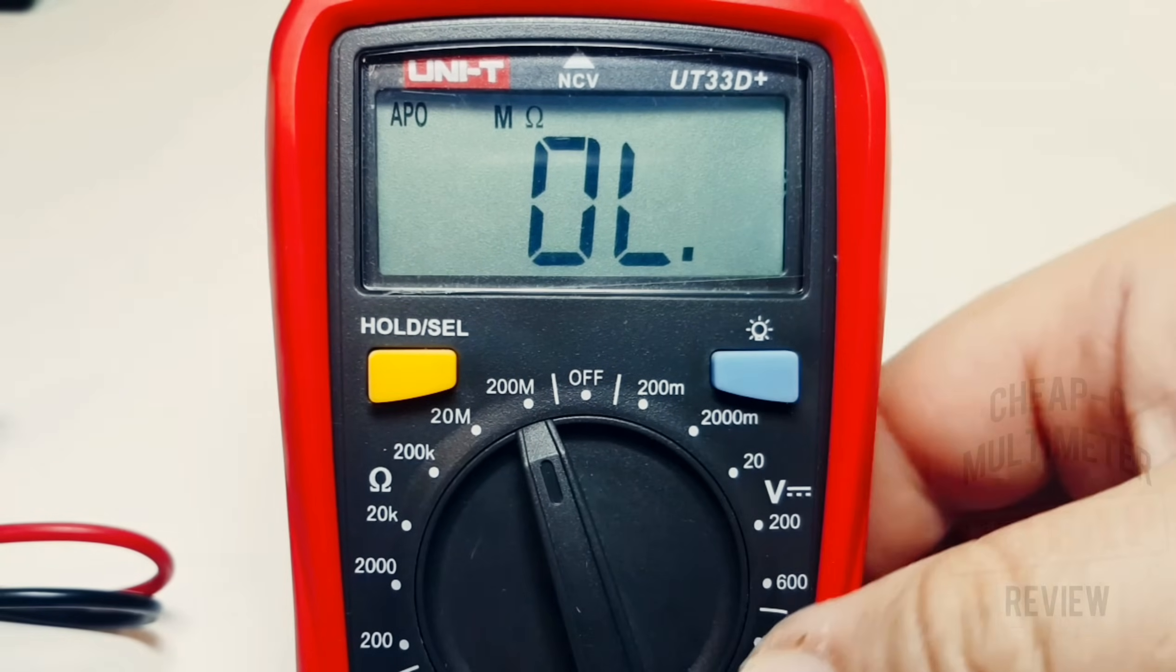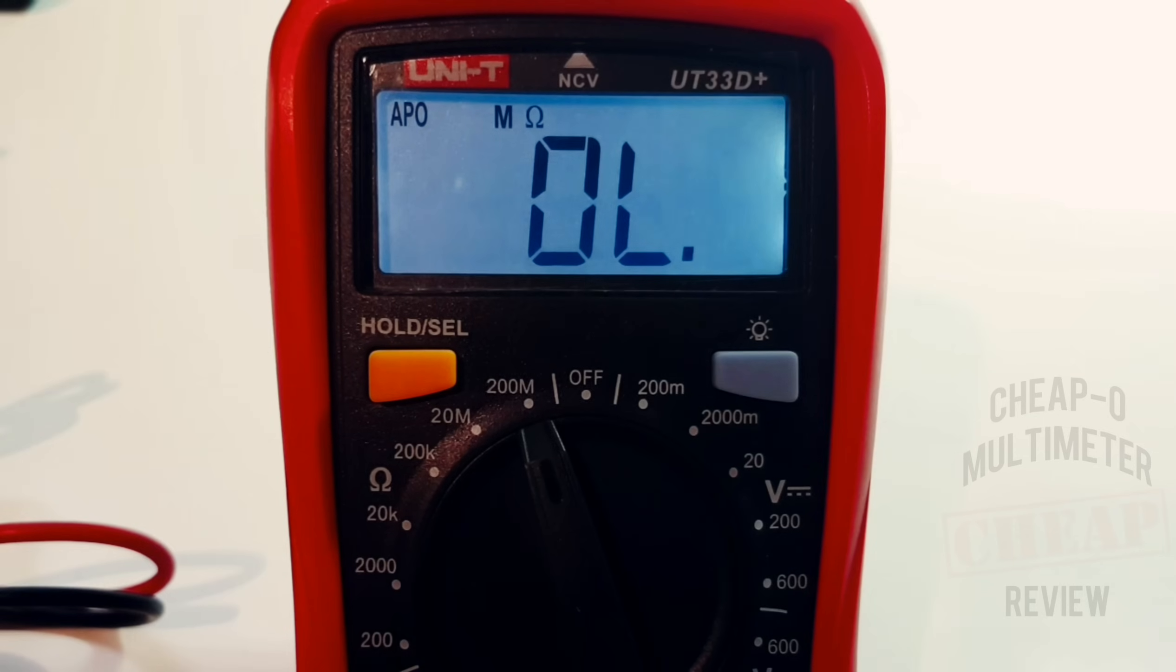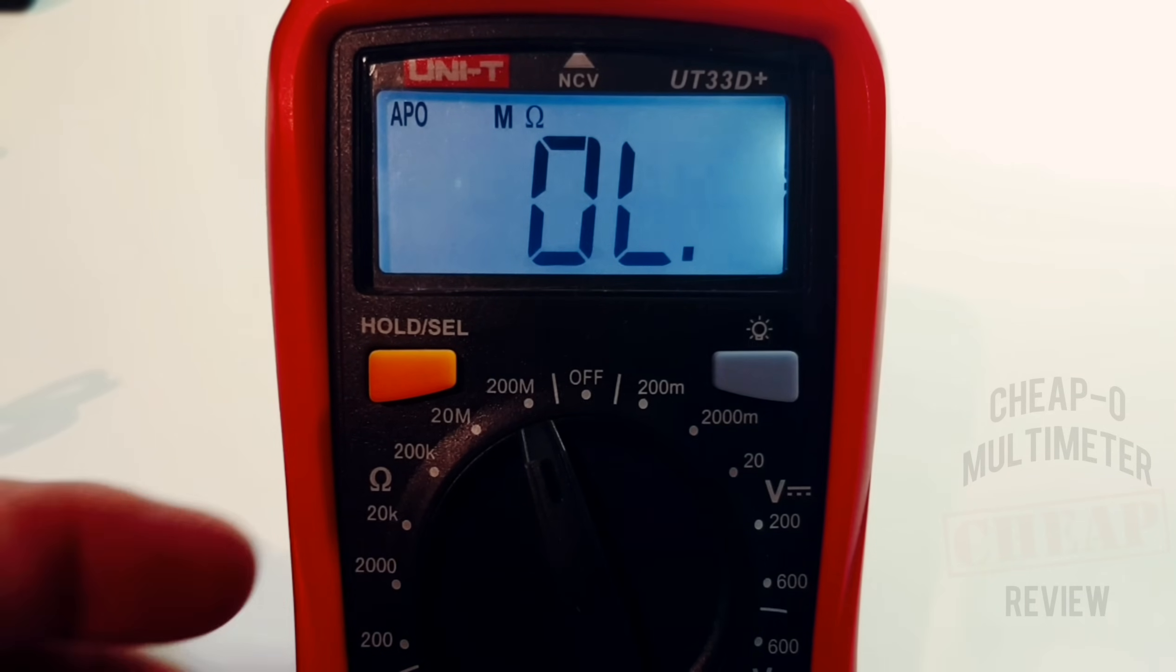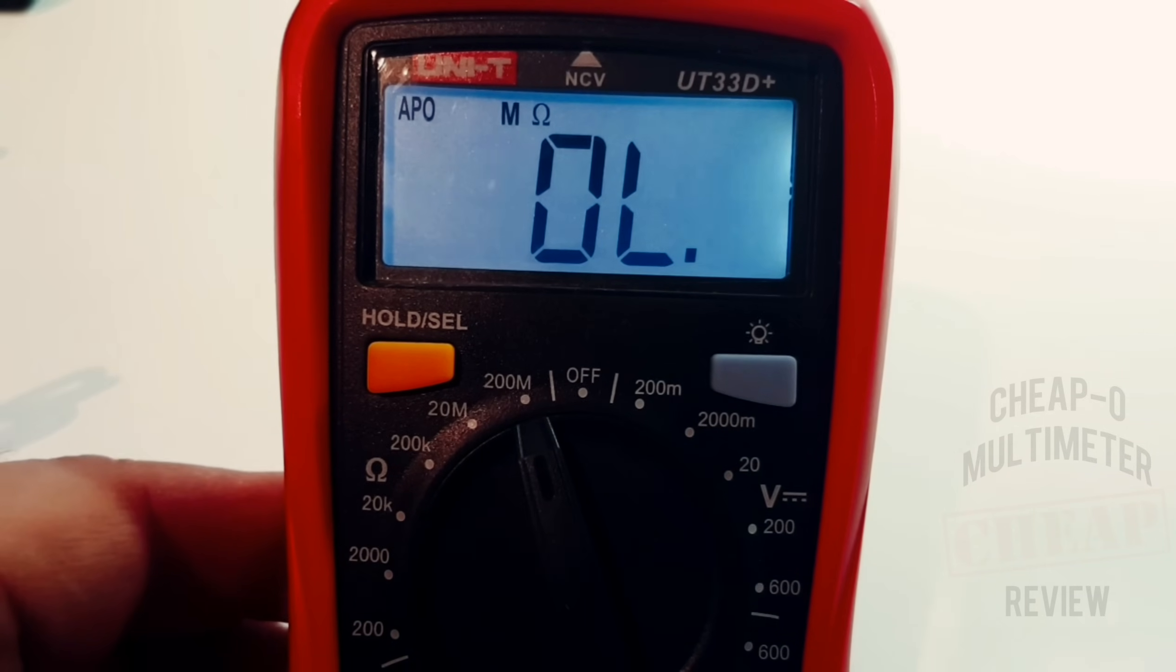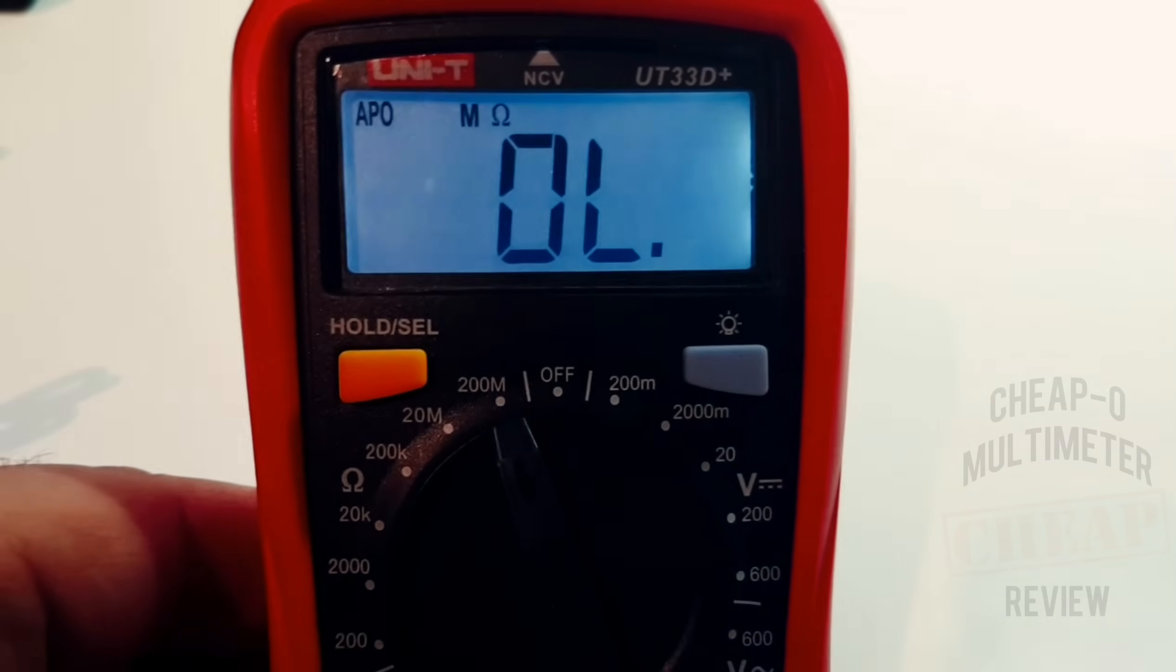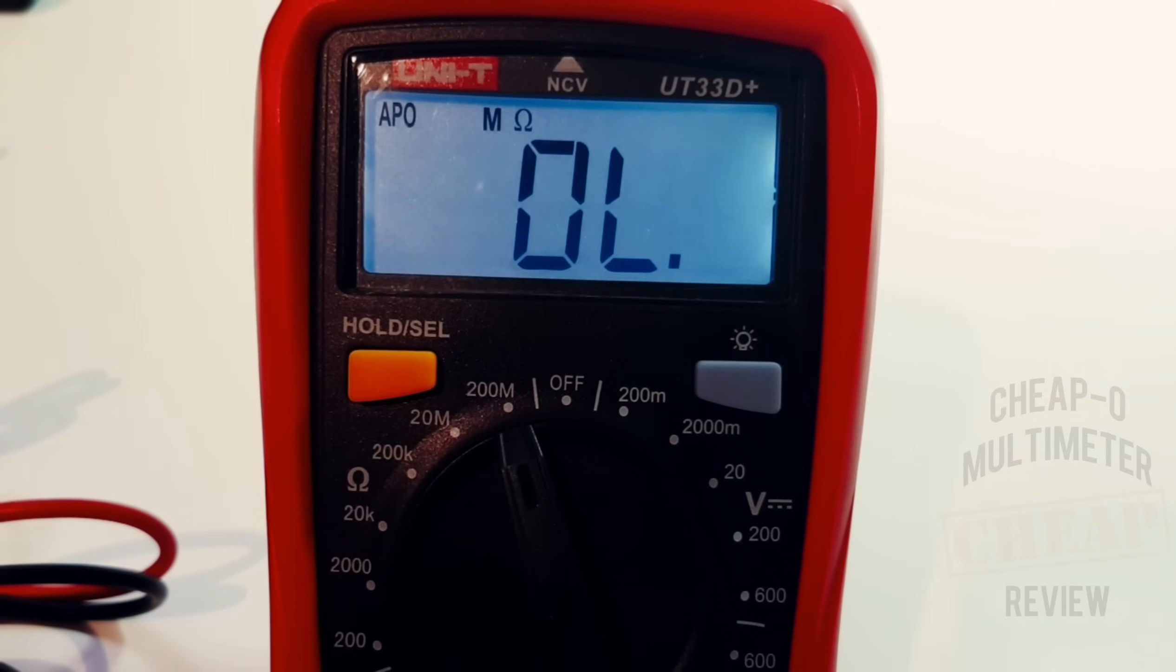Now this also does feature a backlight. We just turn the light off here. You can see it's not too shabby. Perhaps it could be a tiny bit brighter, but that being said, it definitely does the job. Now the backlight will time out after approximately 45 seconds or so, so it is on a little bit longer than your typical cheapo meter, but it is not going to stay on indefinitely.